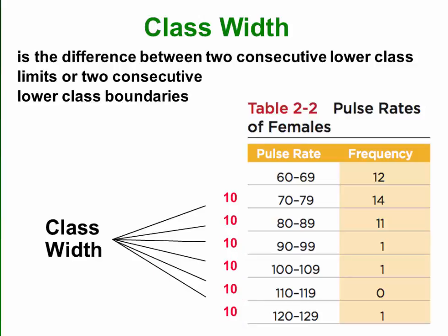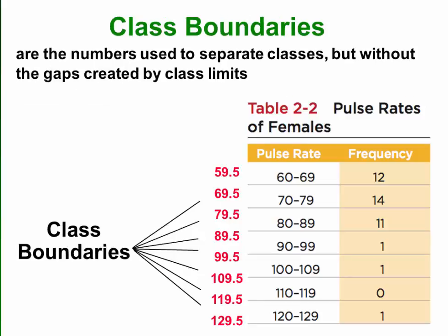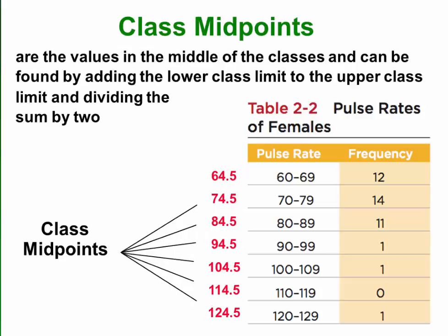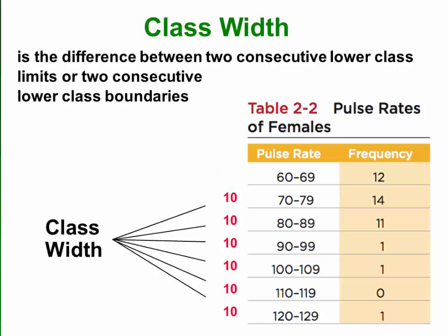If we were to subtract any two consecutive class boundaries, we would also get 10. And if we were to subtract any two consecutive class midpoints, we would get 10 again. So the class width is consistent whether you are subtracting consecutive class limits, class boundaries, or even class midpoints.